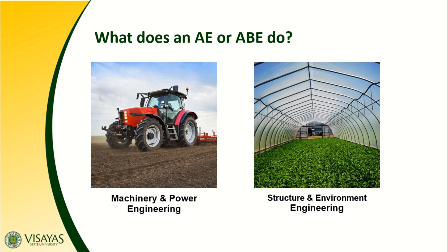We also have Structure and Environment Engineering. In this field of specialization, we can design structures found on farms, like greenhouses, storage of farm products, and animal houses such as poultry houses and swine houses. This involves designing structures capable of withstanding environmental challenges. For the environmental engineering part, this includes developing biogas generation systems and waste disposal systems for the conservation of the environment from farm operations.